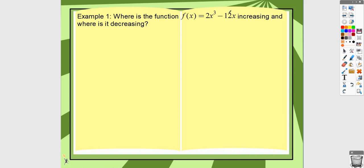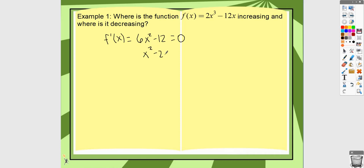Where is this function increasing? Where is it decreasing? The first thing is to find the derivative: 6x² − 12. Set that equal to zero. I can divide everything by 6, so x² = 2. Don't forget about the plus or minus — it's going to be plus or minus square root of 2.